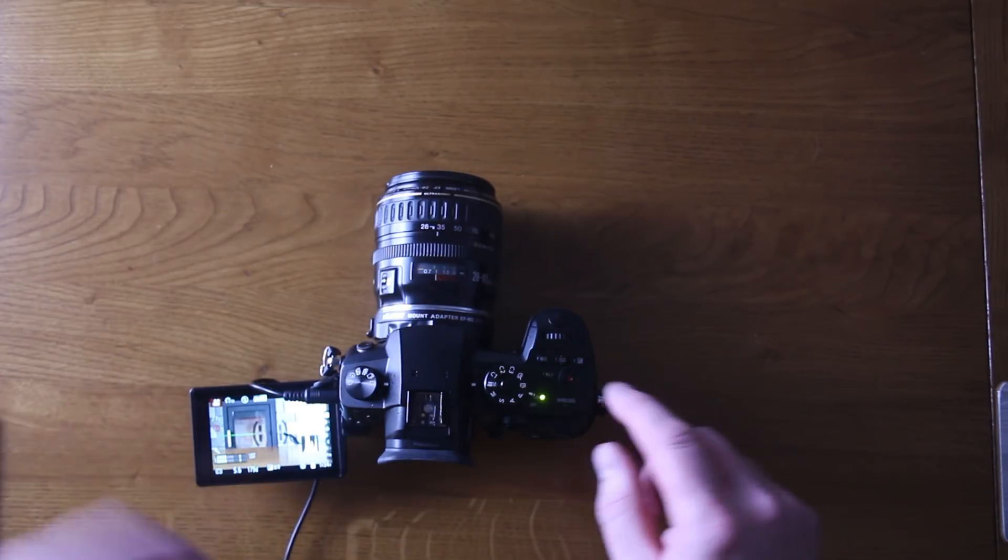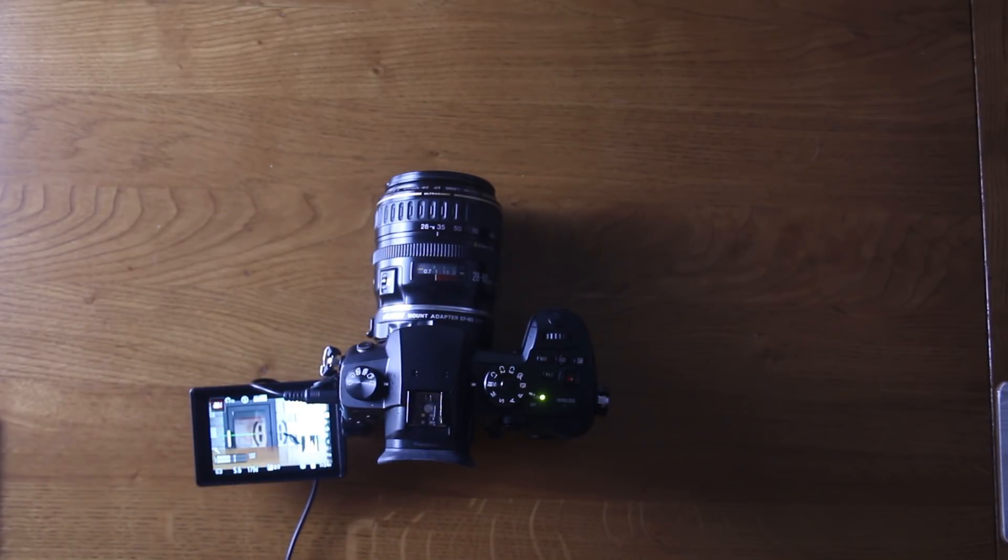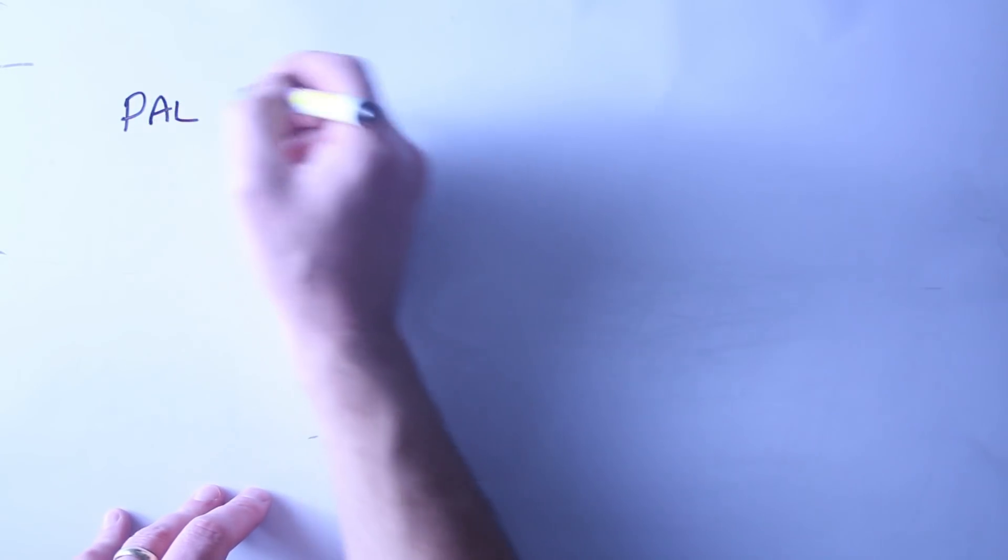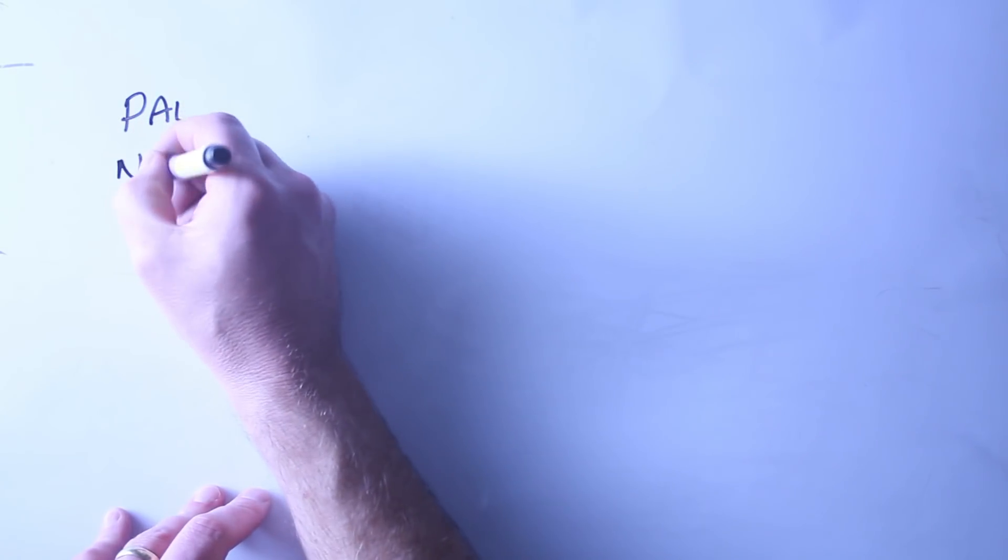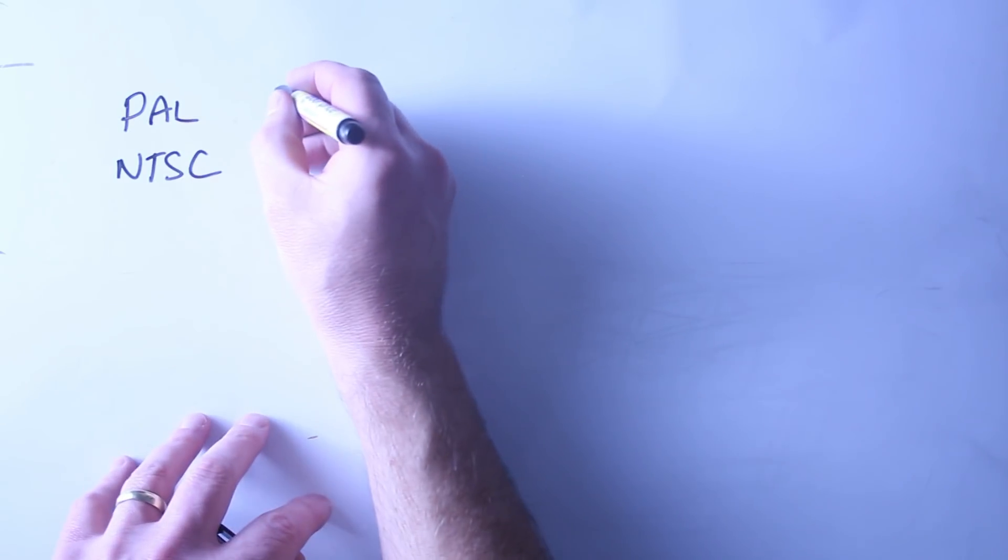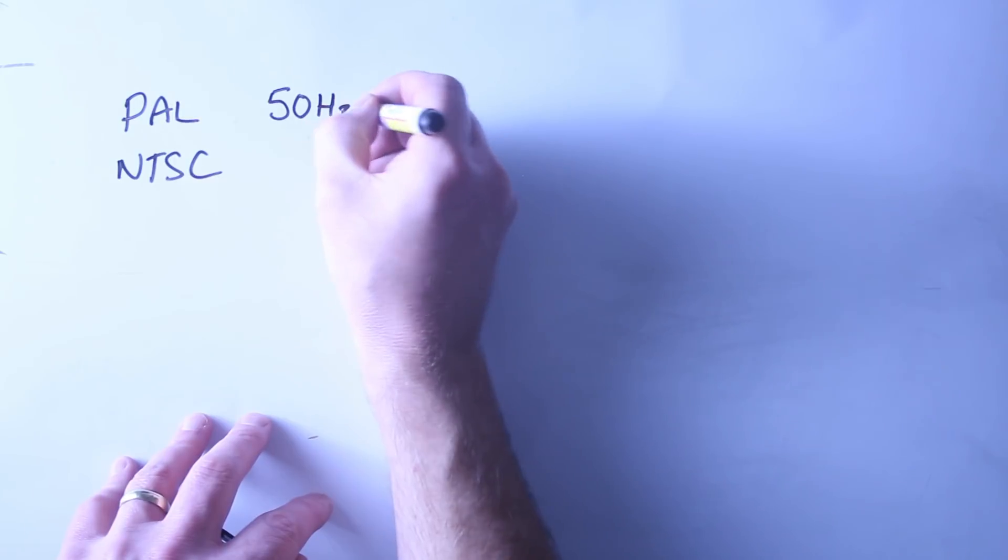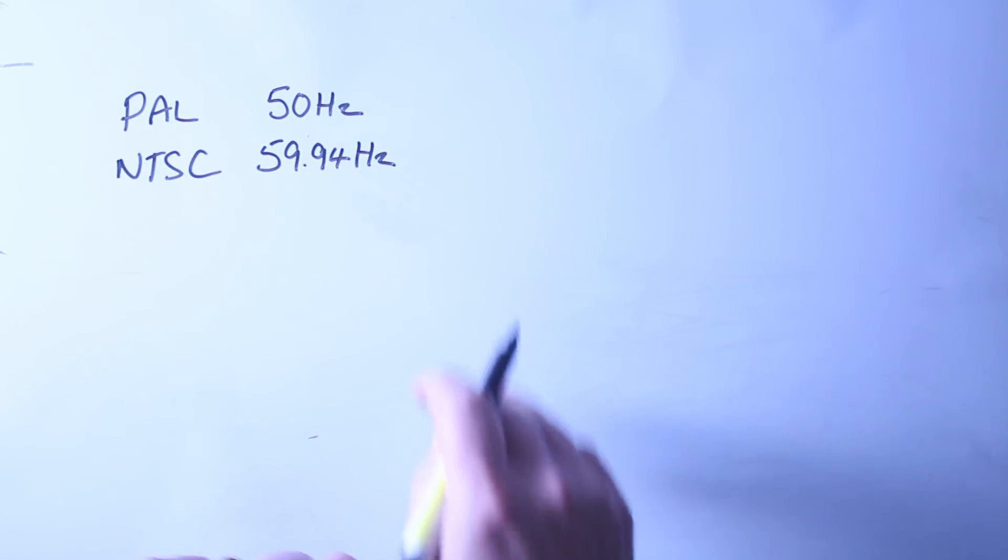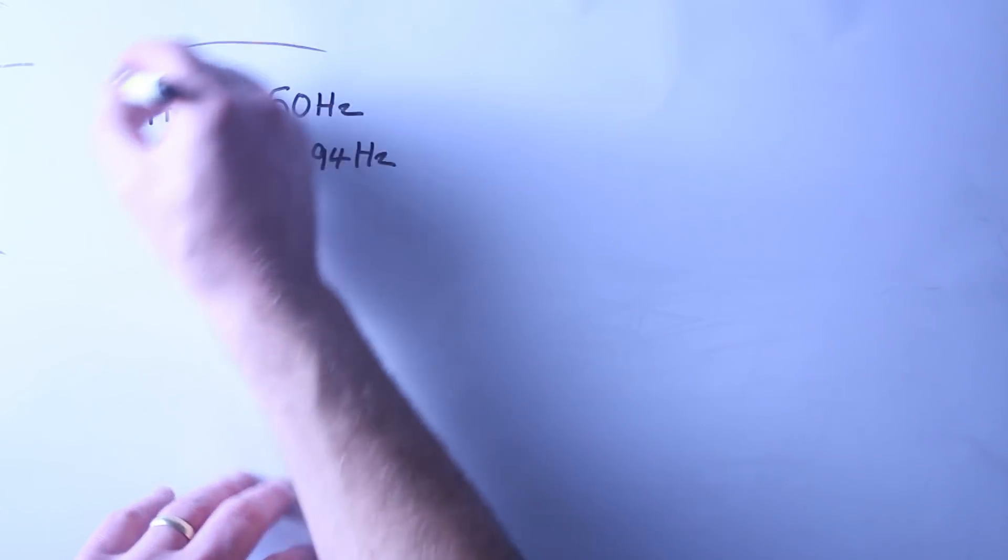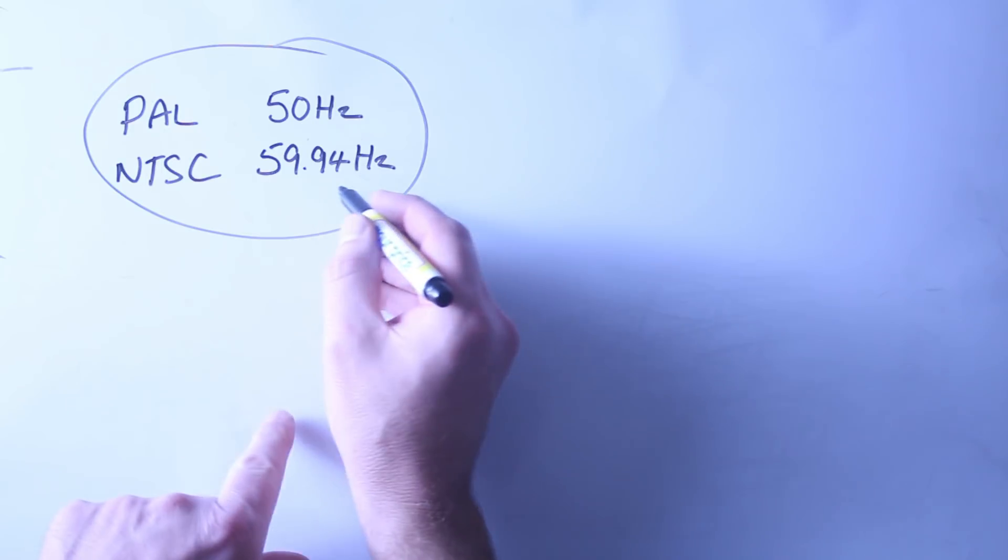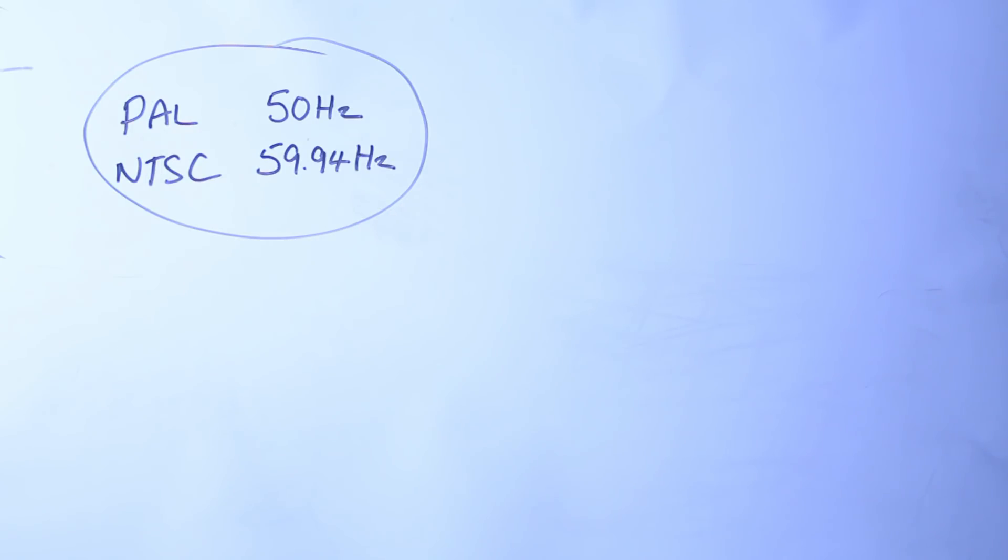Now there's a reason for that, and if you're a bit of a geek like me, then this is right up your street. To do this, we're going to use a good old-fashioned whiteboard. One of the first things you do when you turn the camera on is choose if you're in PAL or NTSC.